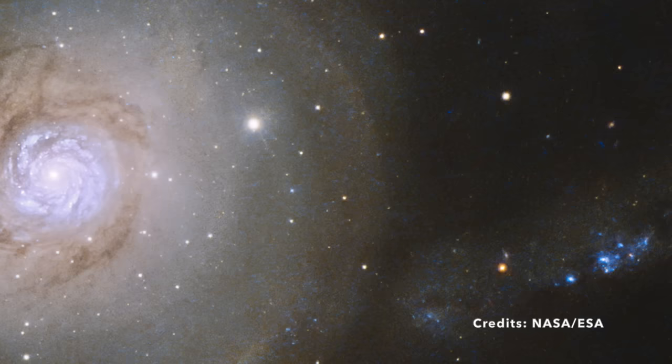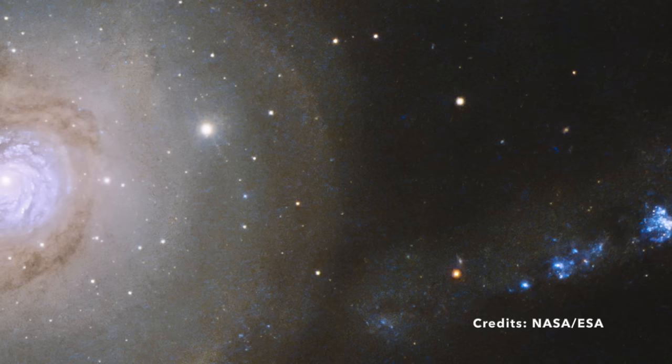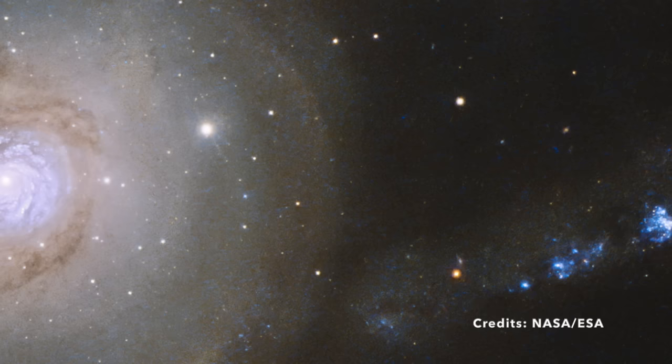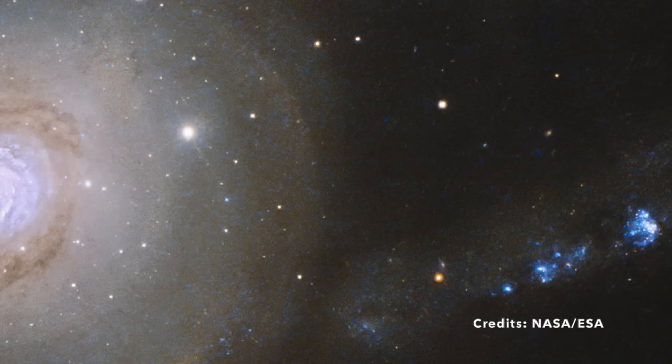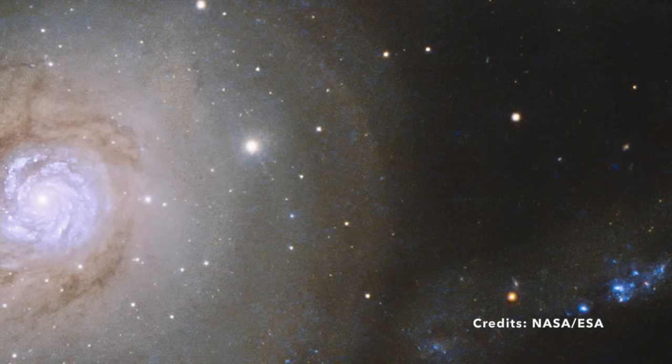Roughly one gyr ago—gyr stands for a billion years, for those of us not fluent in astronomical time—two smaller galaxies collided and merged in a grand cosmic dance. This was no gentle waltz, but a full-blown tango with twists and turns culminating in the magnificent structure we now see.